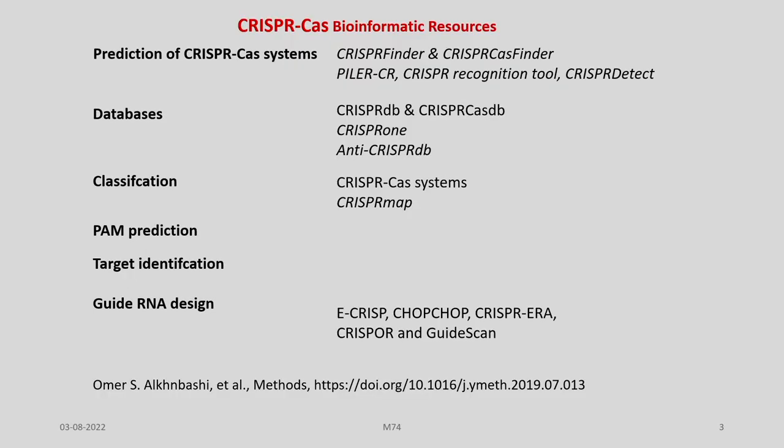One important aspect of CRISPR-Cas9 technology is the development of guide RNA. We have discussed how the various features of the guide RNA may help in mobilizing Cas9 to the target site. Guide RNA design is a very important step, and various researchers have developed numerous bioinformatics tools like E-CRISP, CHOPCHOP, CRISPR-ERA, and CRISPR-OR.